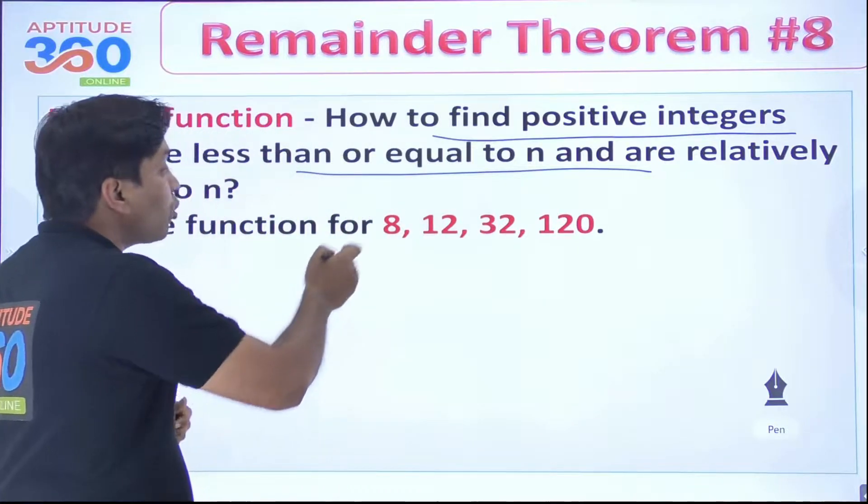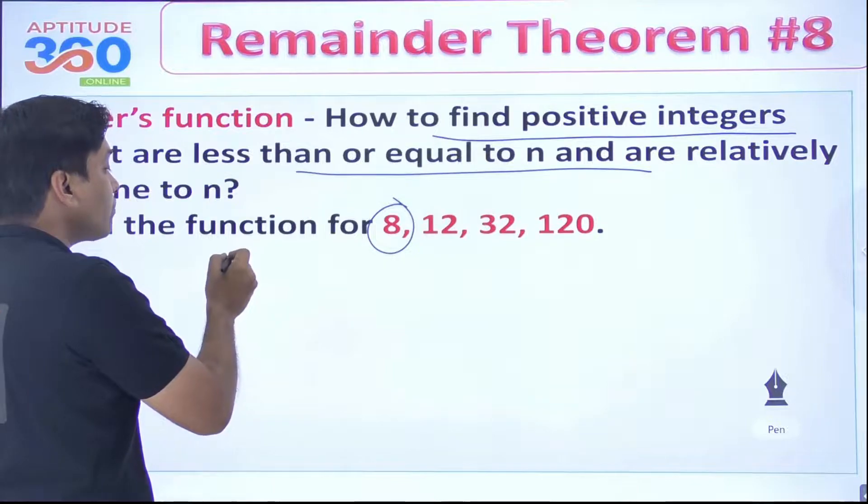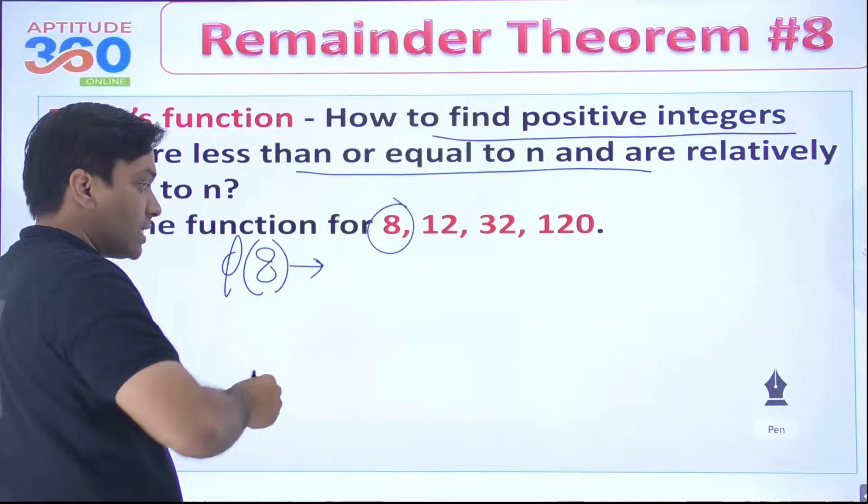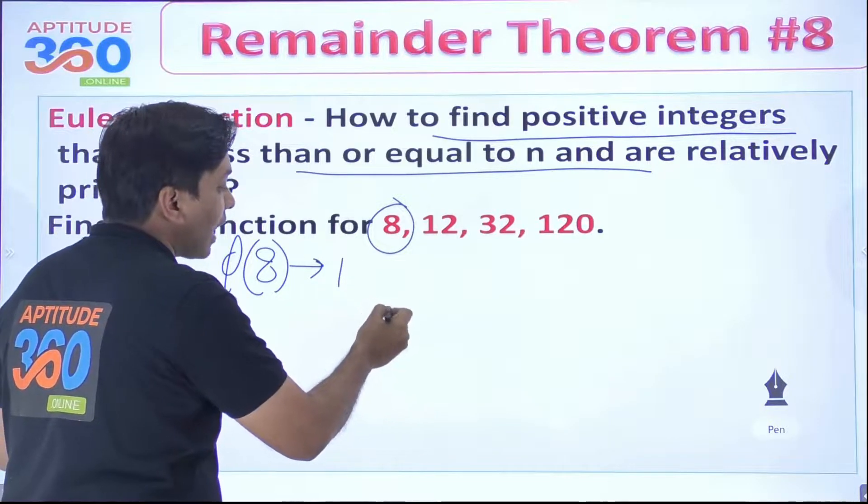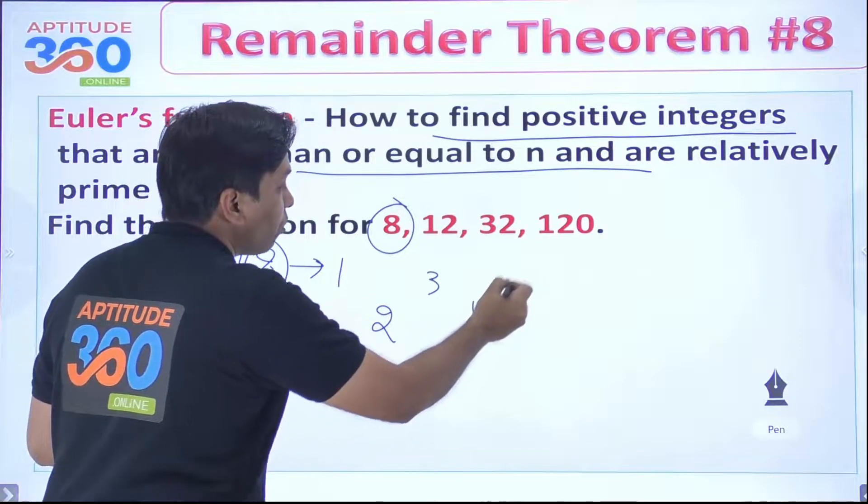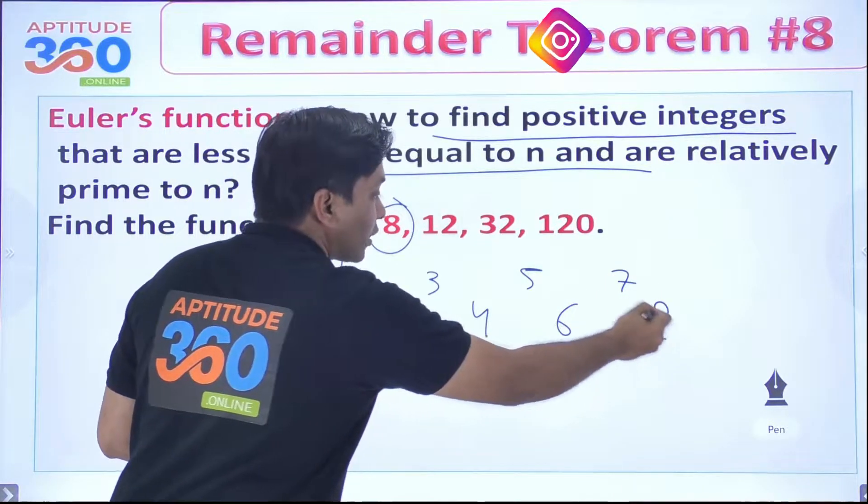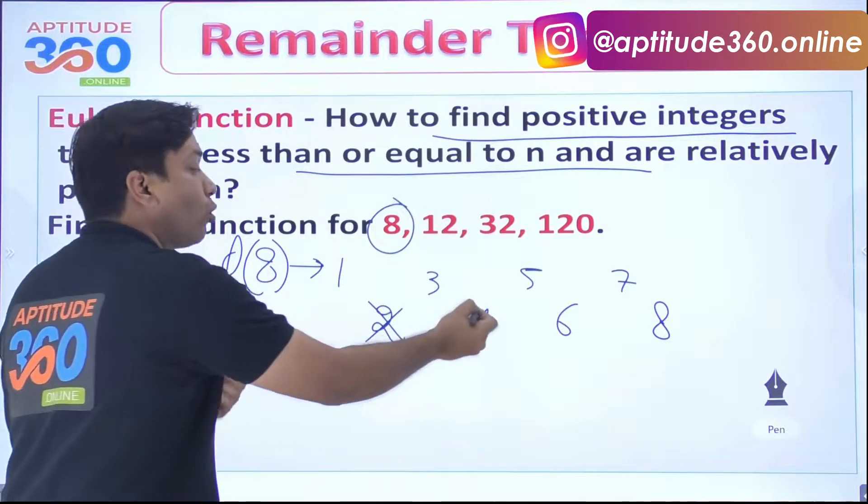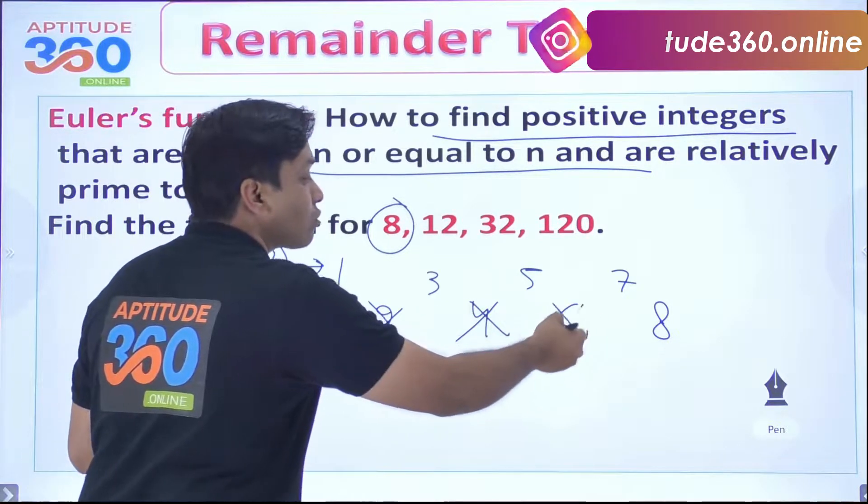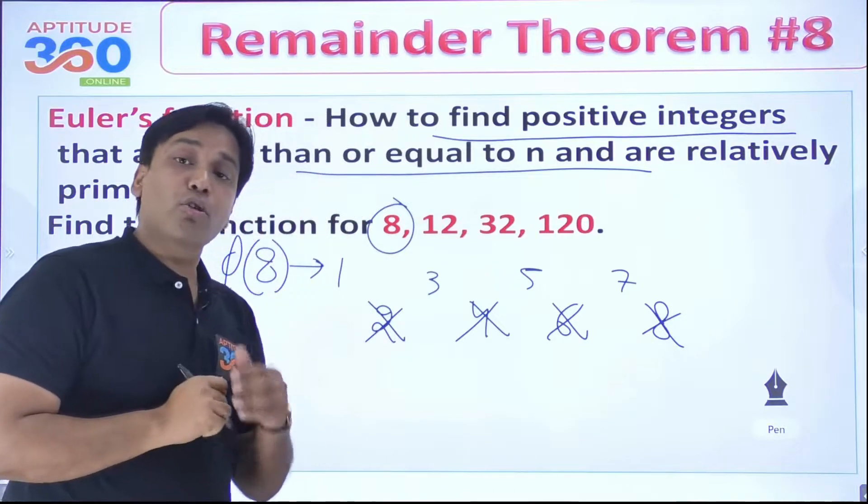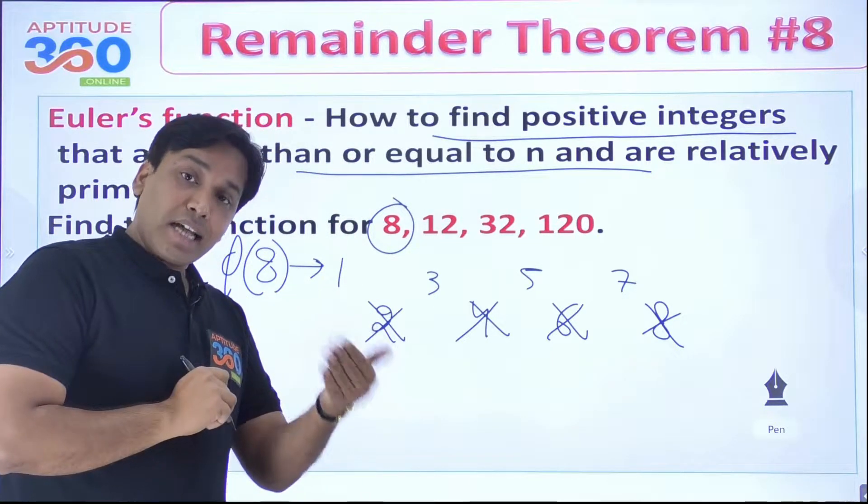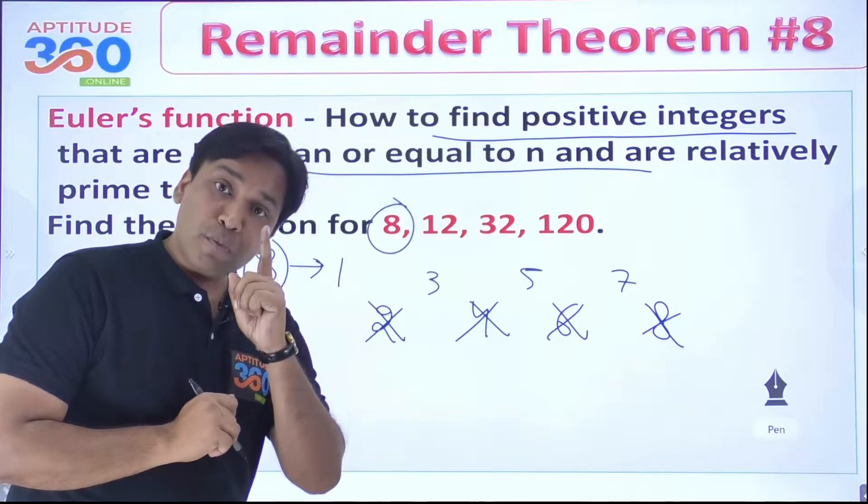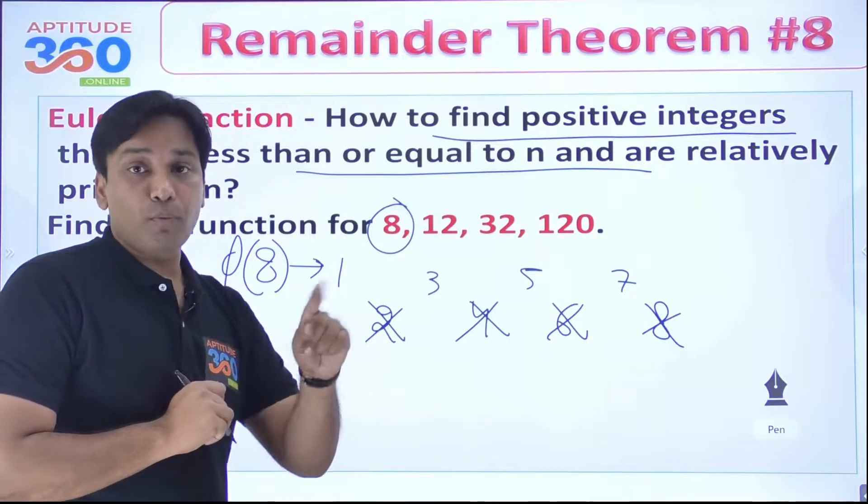If you need to find Euler's function for 8, this says that you have 1, 2, 3, 4, 5, 6, 7 and 8. What does that mean? 2 is not coprime to 8, 4 is not coprime to 8, 6 is not coprime to 8, and 8 is not coprime to 8. Another way of saying this is that two numbers whose highest common factor is 1, only then the numbers are coprime to each other.